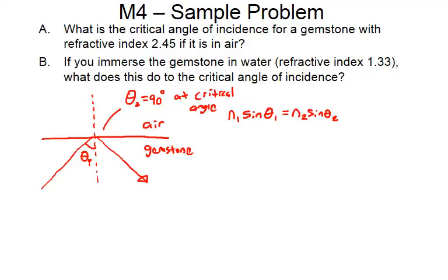So for theta 2 being 90 degrees, 2.45 is where we start in gemstone, this is N1. N2 is air, and then I'll be sine of 90 there. So we should get an angle of 24.09 degrees.